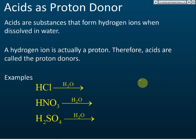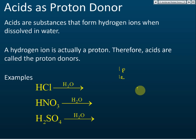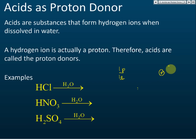A hydrogen atom consists of one proton and one electron — there is no neutron. Hydrogen has no neutrons. So a hydrogen atom has a nucleus containing just one proton, and outside the nucleus there is one electron.